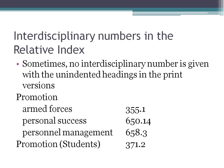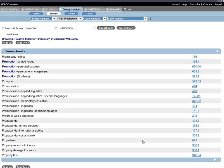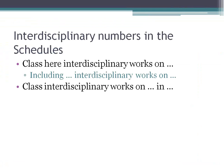Dewey is not very consistent about where interdisciplinary numbers appear — sometimes in the relative index and sometimes only in the schedules. Here's an example of a heading that does not have an interdisciplinary number in the relative index at all. In this case, you still want to look for notes in the schedule that say either 'class here interdisciplinary works on a certain topic' or direct you to another number, and you'll have to click through or flip to that page.